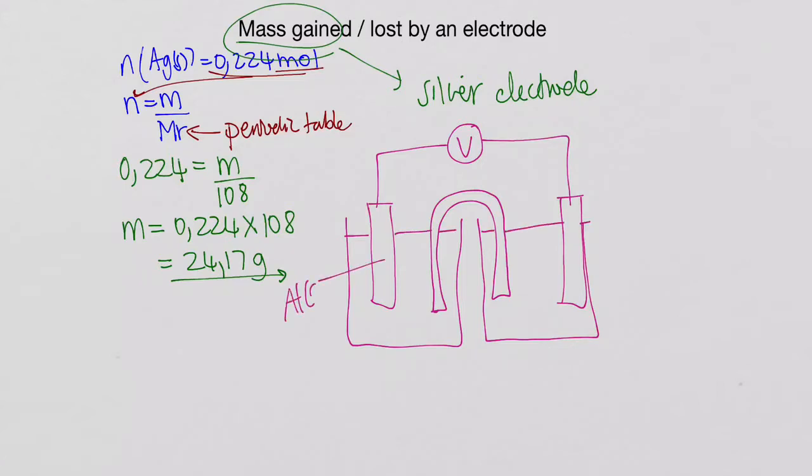On the right-hand side, we had a cathode. We had our aluminum solid anode. And this side, we had our AG solid, our silver solid cathode.